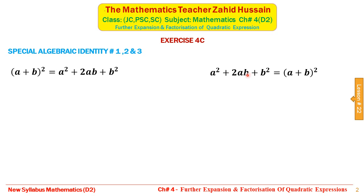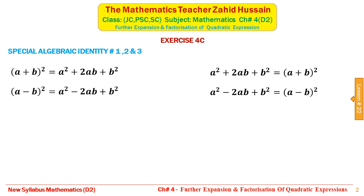The second identity is (a − b)² = a² − 2ab + b², which can also be written in reverse form. You will be given an expression with three terms: two of them are perfect squares and the third is the double product of the two. We first write the given expression in this form and then write it as (a − b)² — that gives us the factorization.